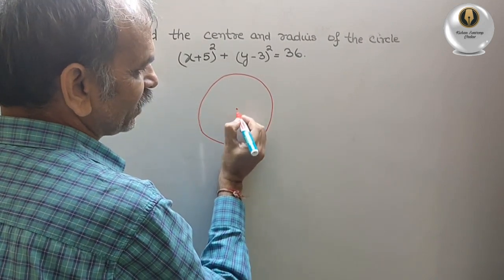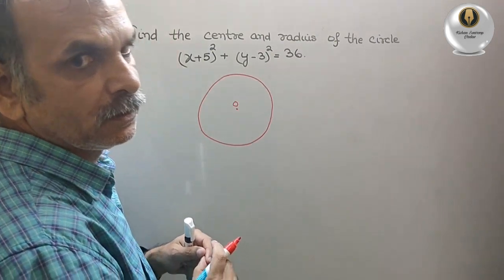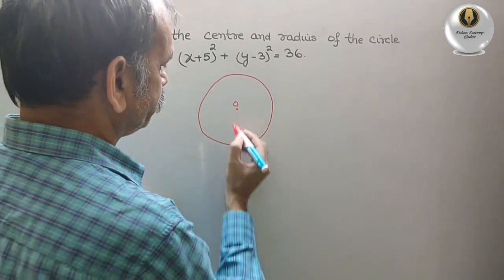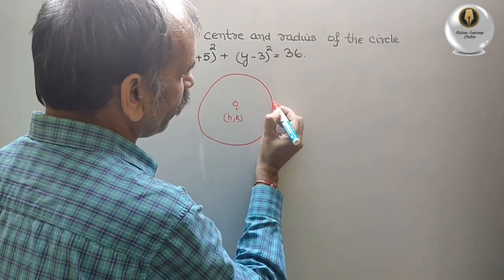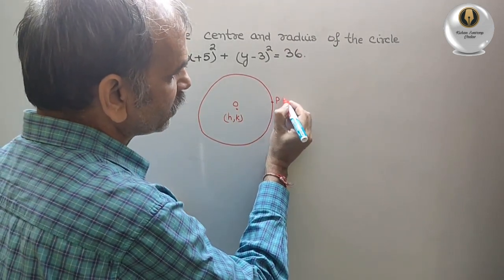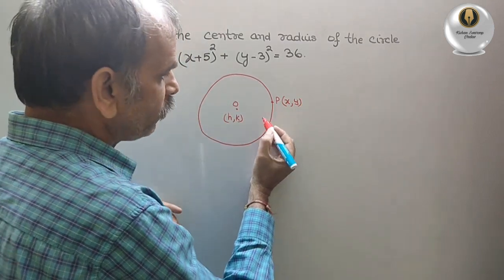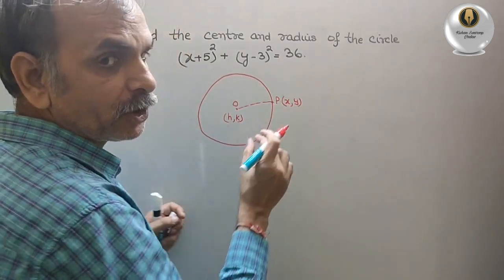And this is your center, that is your O. So center should always be h comma k, and the point on the circle is always x comma y. Now if you draw a line joining this point, that is nothing but your radius.